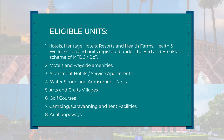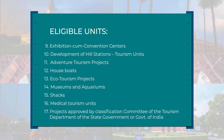Eligible units covered under the policy include hotels, heritage hotels, resorts, health farms, health and wellness spas registered under the bed and breakfast scheme of MTDC or DOT, motels and wayside amenities, apartment hotels and service apartments, water sports and amusement parks, arts and craft villages, golf courses, camping, caravanning, tent facilities and aerial ropeways, exhibition and convention centers, hill station development as tourism units, adventure tourism projects, houseboats, ecotourism projects, museums, aquariums, shacks, and medical tourism units.